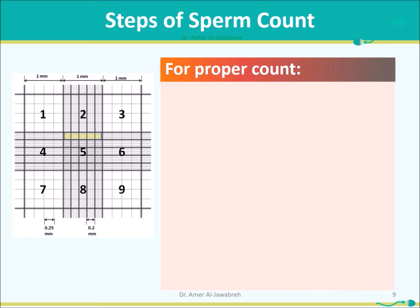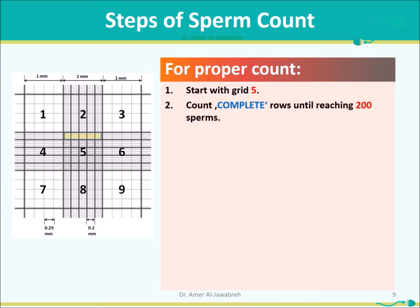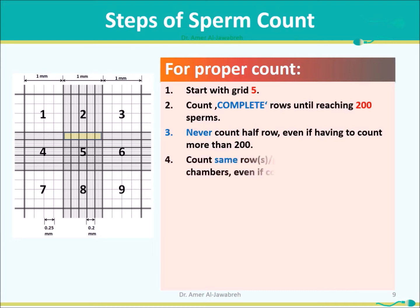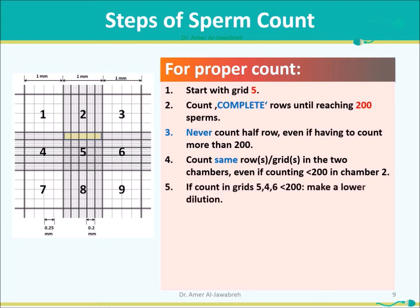Steps of sperm count: Start with grid 5. Count complete rows until reaching 200 sperms. Never count half a row, even if you have to count more than 200 sperms. Count the same rows and grids in both chambers, even if counting less than 200 in chamber 2. If counting grids 5, 4, and 6 gives less than 200 sperms, make a lower dilution.